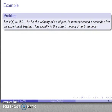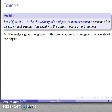Let's take a look at another example here. Let v(t) = 150 - 5t. Here we have an explicit formula for the velocity of the object. And we want to determine how rapidly the object is moving after six seconds. Well, a little bit of analysis goes a long way. In this problem, our function actually gives the velocity of an object in meters per second. And what we're looking for, how rapidly is the object moving? Well, that sounds a lot like a velocity.